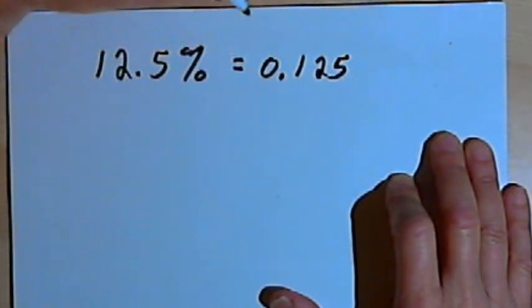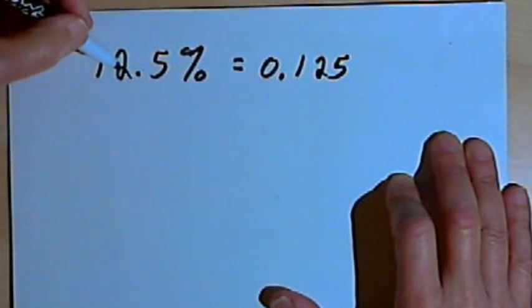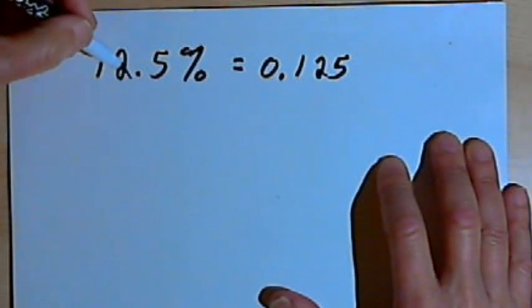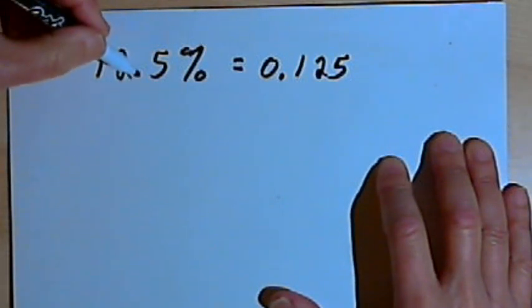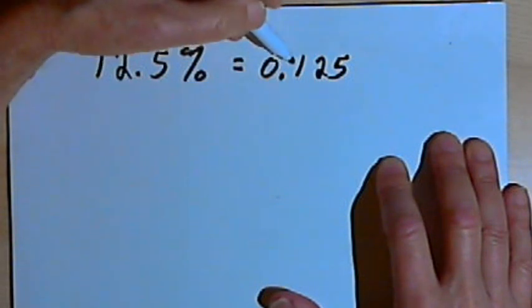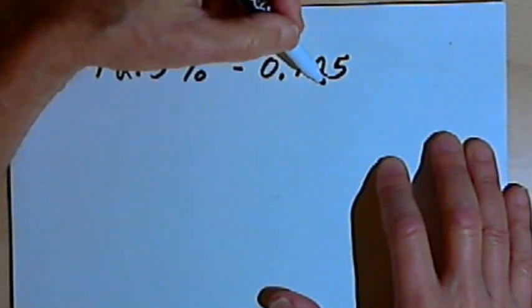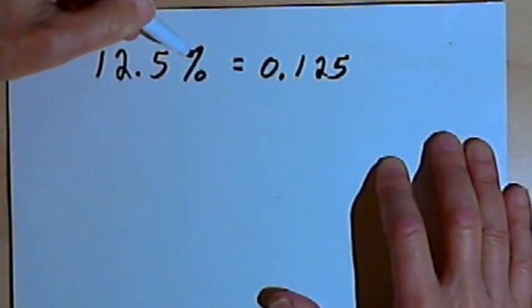I might want to put a zero in front of that. And that 0.125 is going to be the equivalent of 12.5 percent. All I did was move its decimal point two places to the left. Now if I want to turn that back into a percent, I'd just reverse the process. I would move the decimal point two places to the right, I'd get 12.5, and I'd add a percent sign.